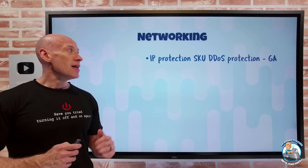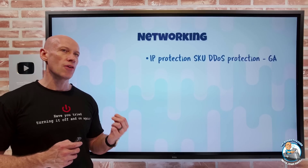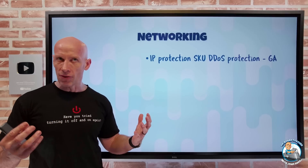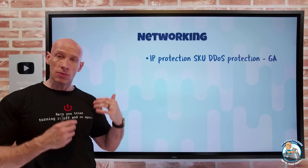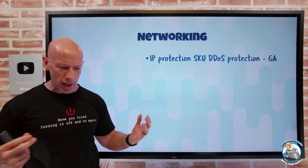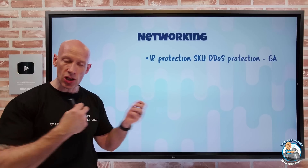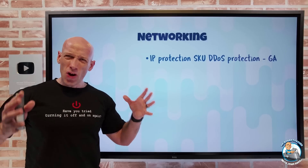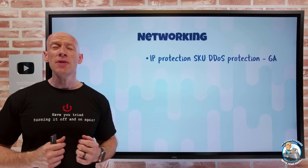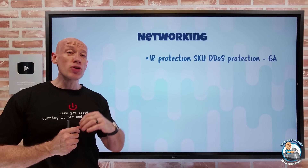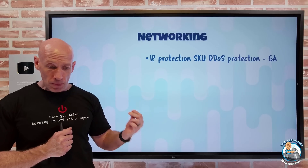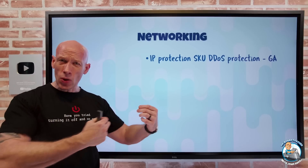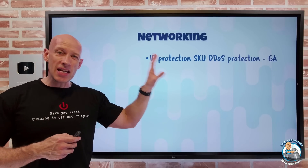On the networking side, we now have IP Protection SKUs for distributed denial of service protection. In the past, to get standard DDoS protection you had to enable it at the virtual network level, protecting all public IPs associated with that virtual network. That gave great monitoring, app-specific tuning for attack recognition, mitigations, metrics, and alerts, but it covered the entire virtual network and required a fairly big plan. This new SKU lets you buy DDoS protection for individual public IP addresses. You get all the same protection capabilities, though without rapid response support, cost protection, or web application firewall discounts - but all the tuning, monitoring, and metrics are there at the individual public IP level.